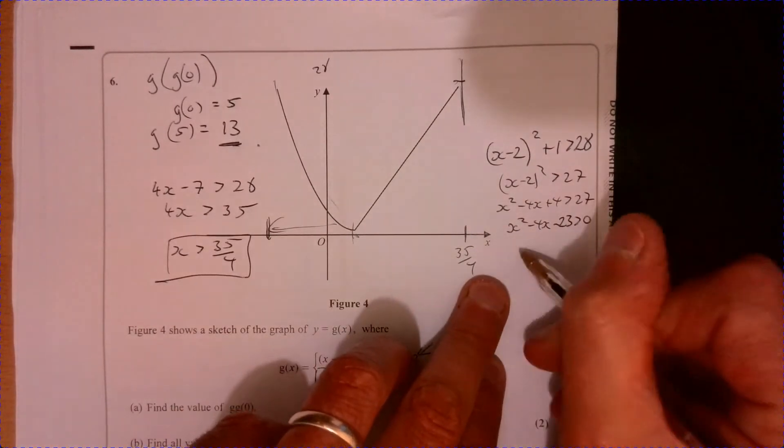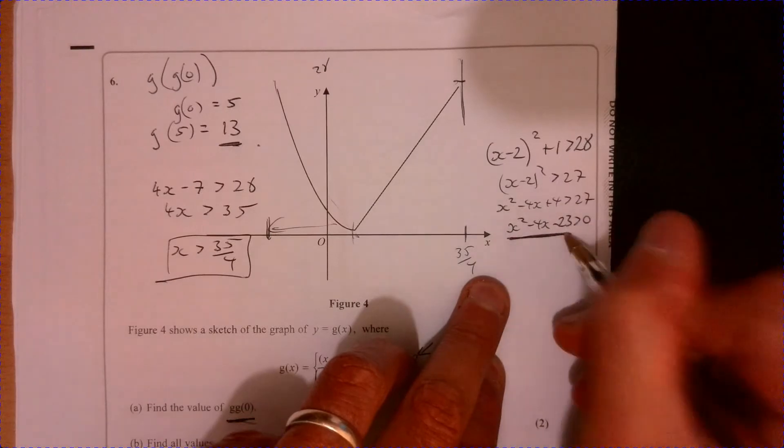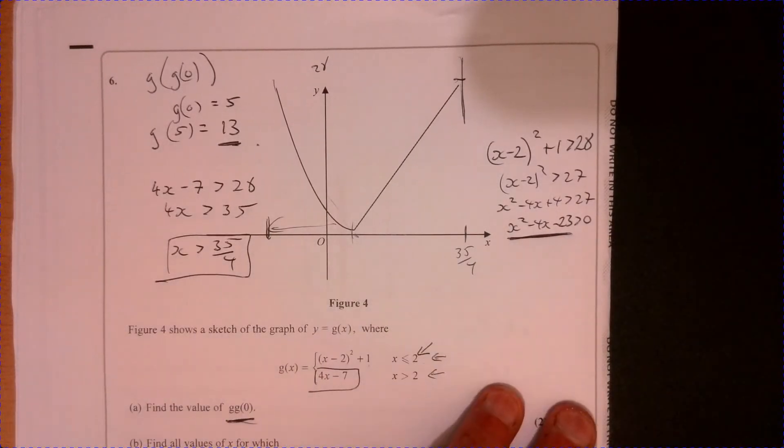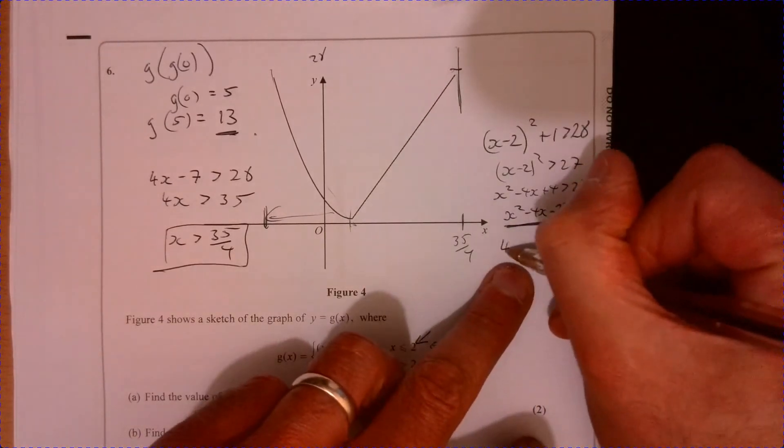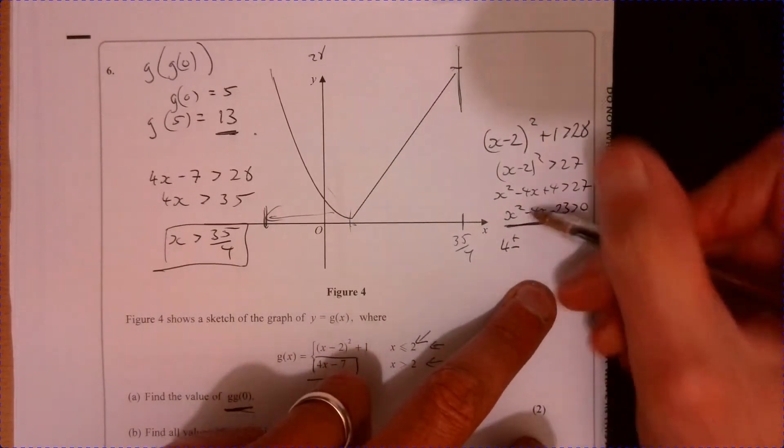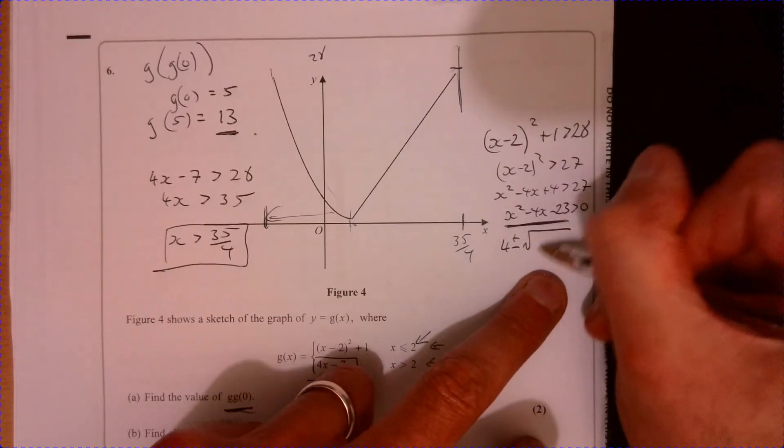So if we... I was hoping that that might factorize, but it's not going to factorize, is it? Minus 23 at the end. So that's not very nice. So we're going to have to use the formula. So that's going to be the easiest bet to do this.